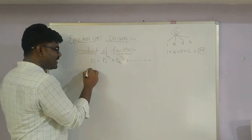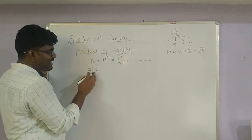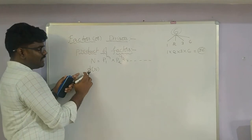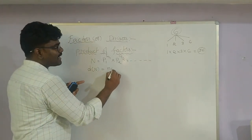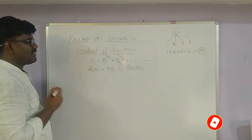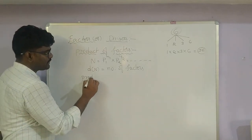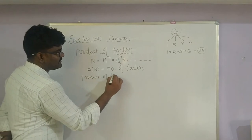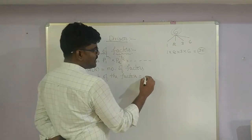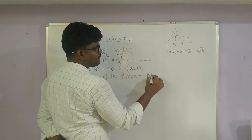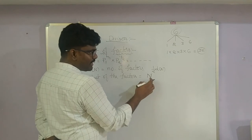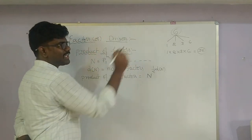After doing prime factorization, the number of factors is denoted d(n). The formula for the product of the factors is: N^(1/2 × d(n)), that is N raised to the power of half of d(n). For example with 6: the number is 6, d(n) = 4, so product = 6^(4/2) = 6² = 36.